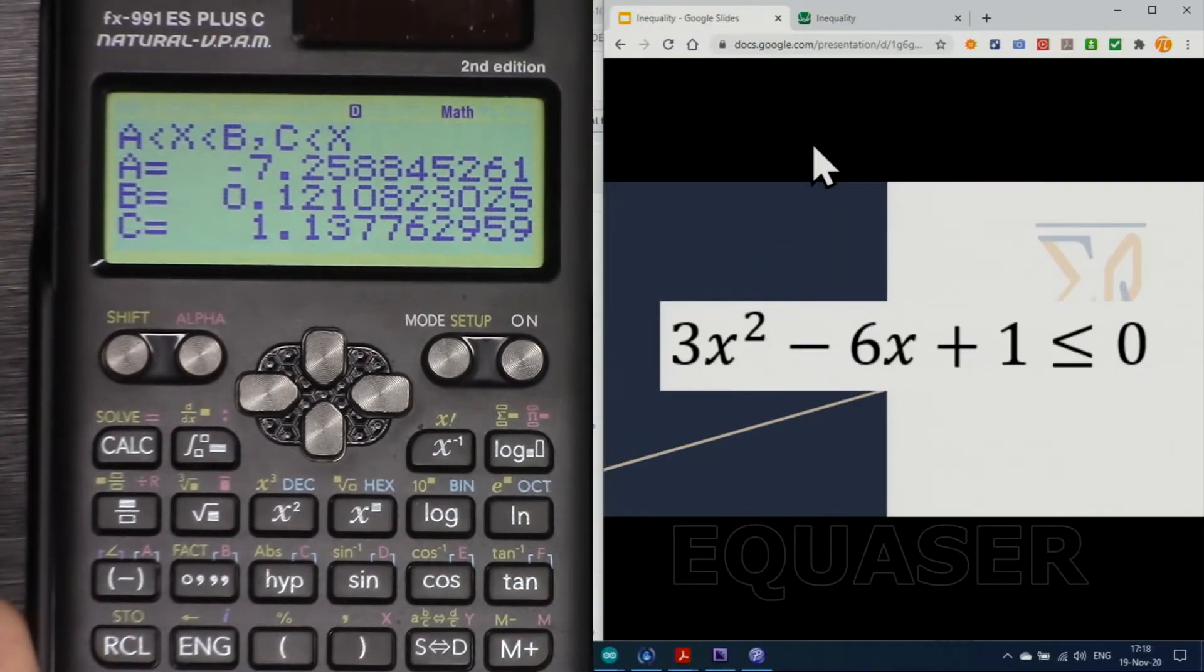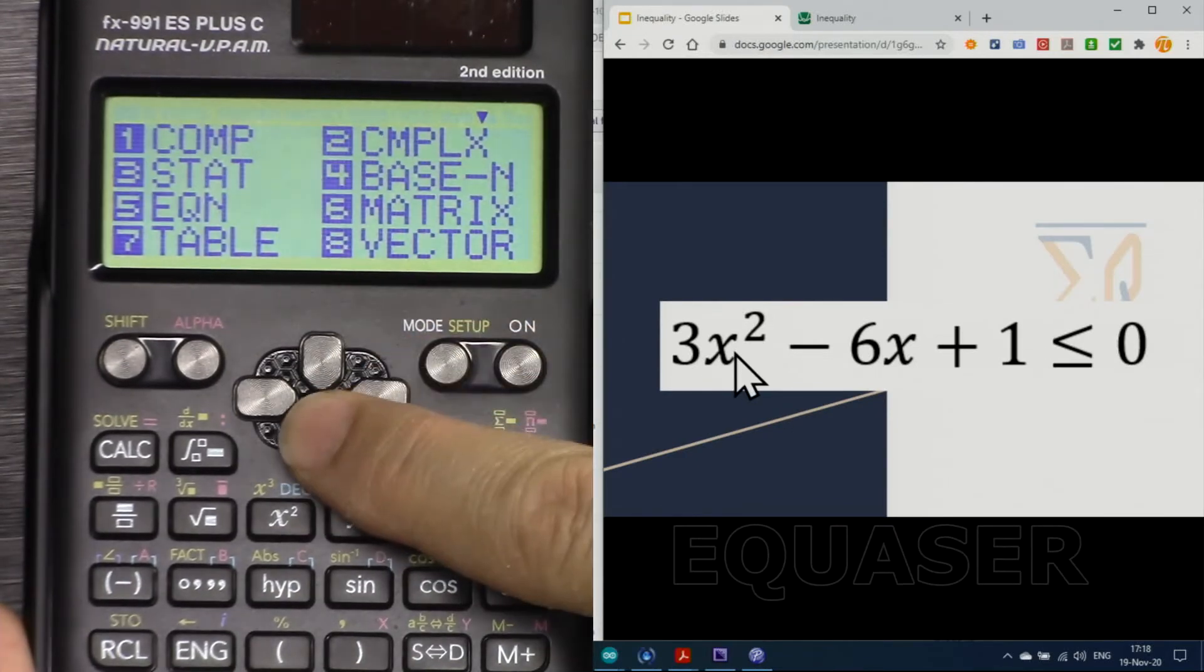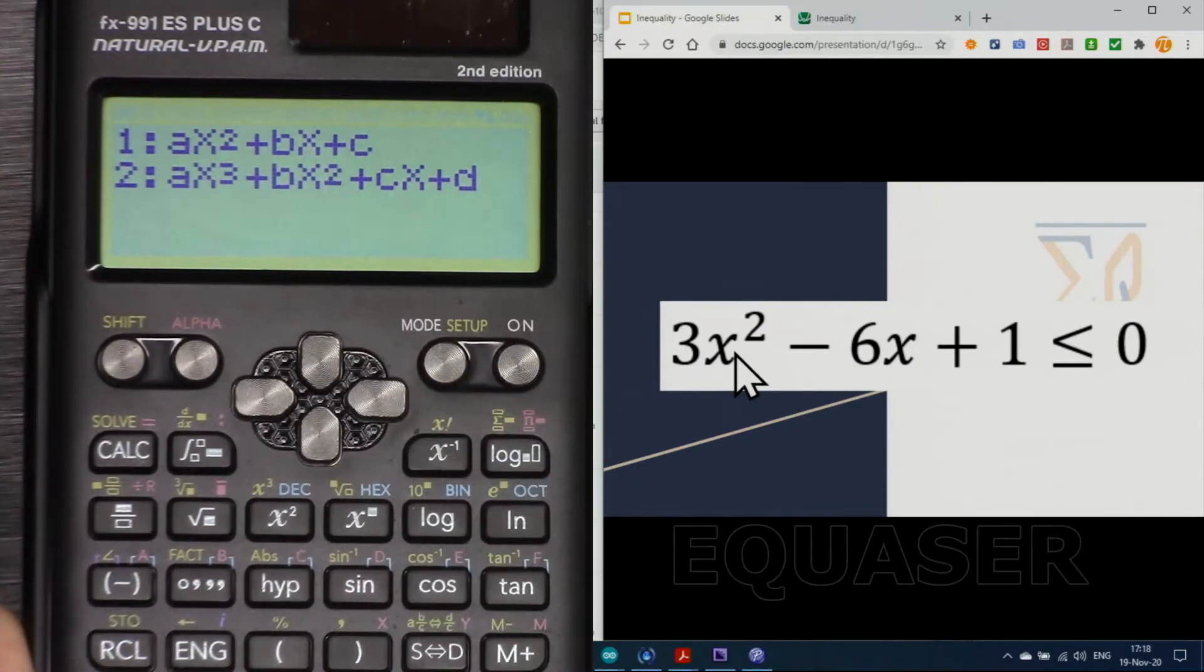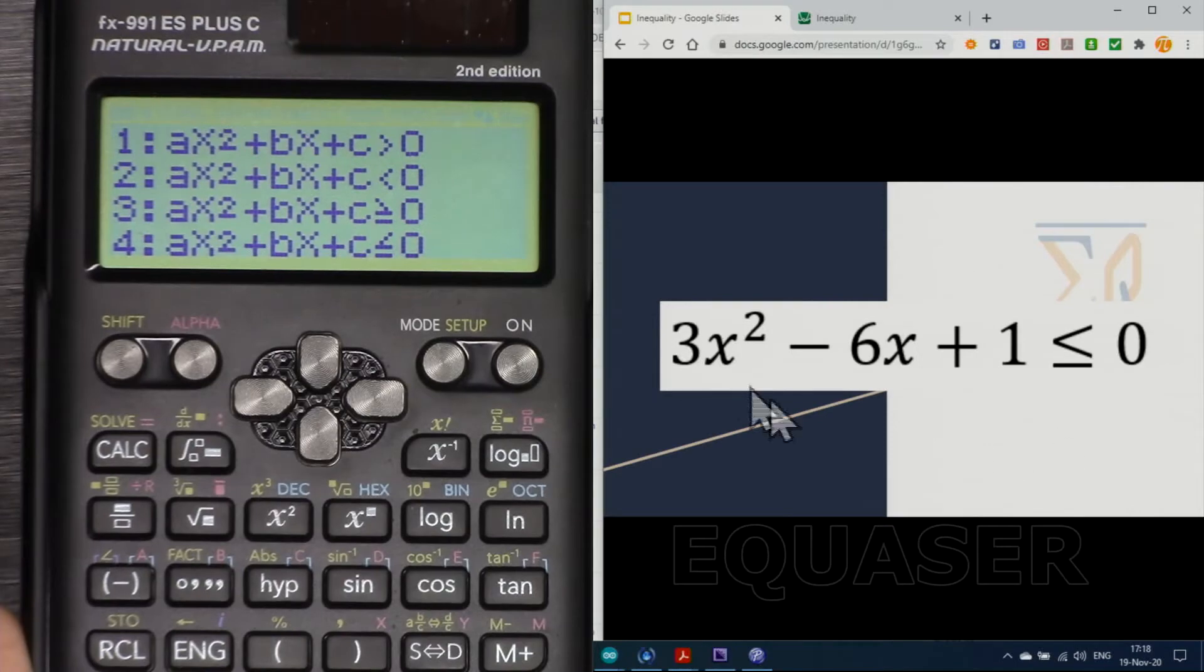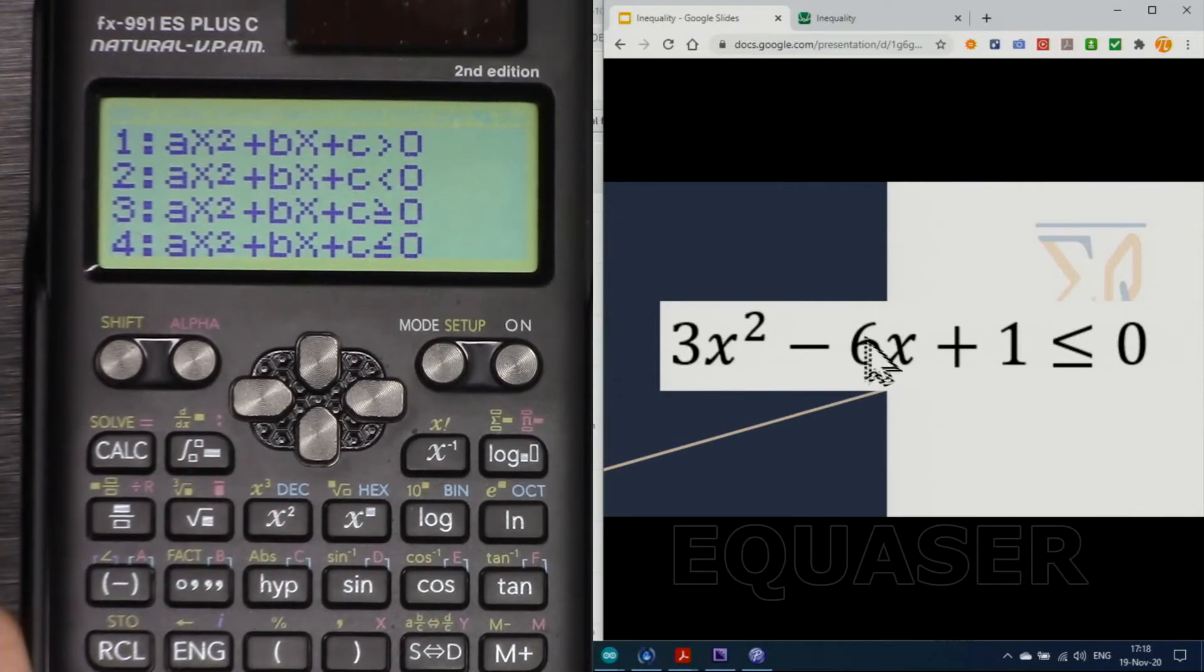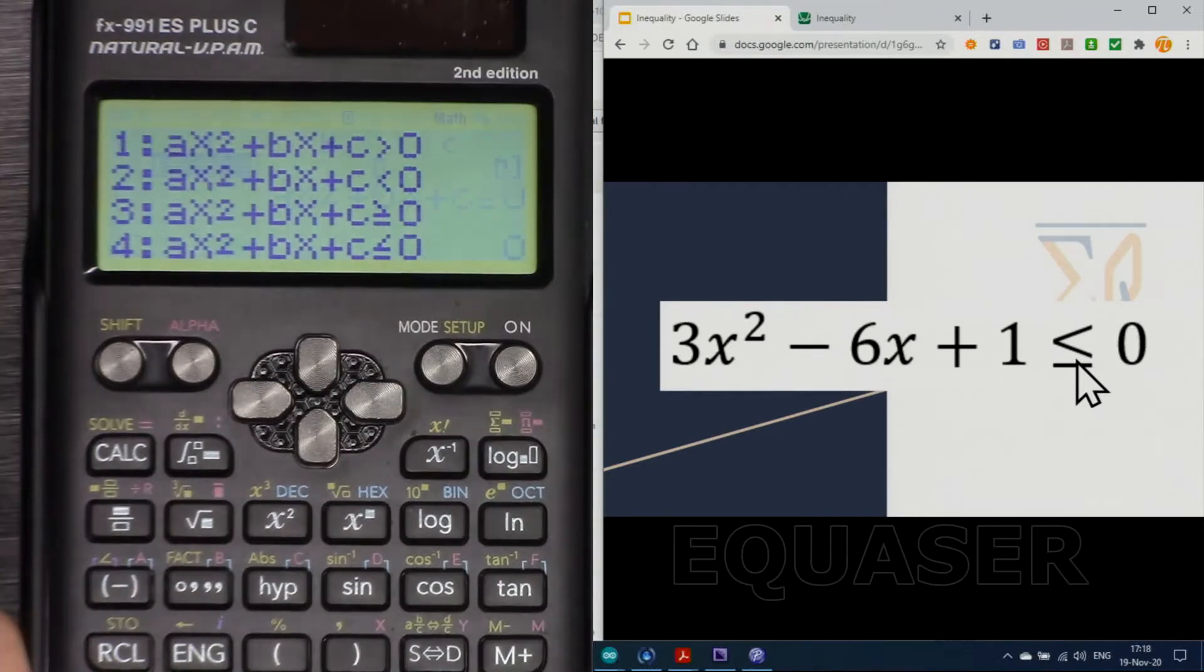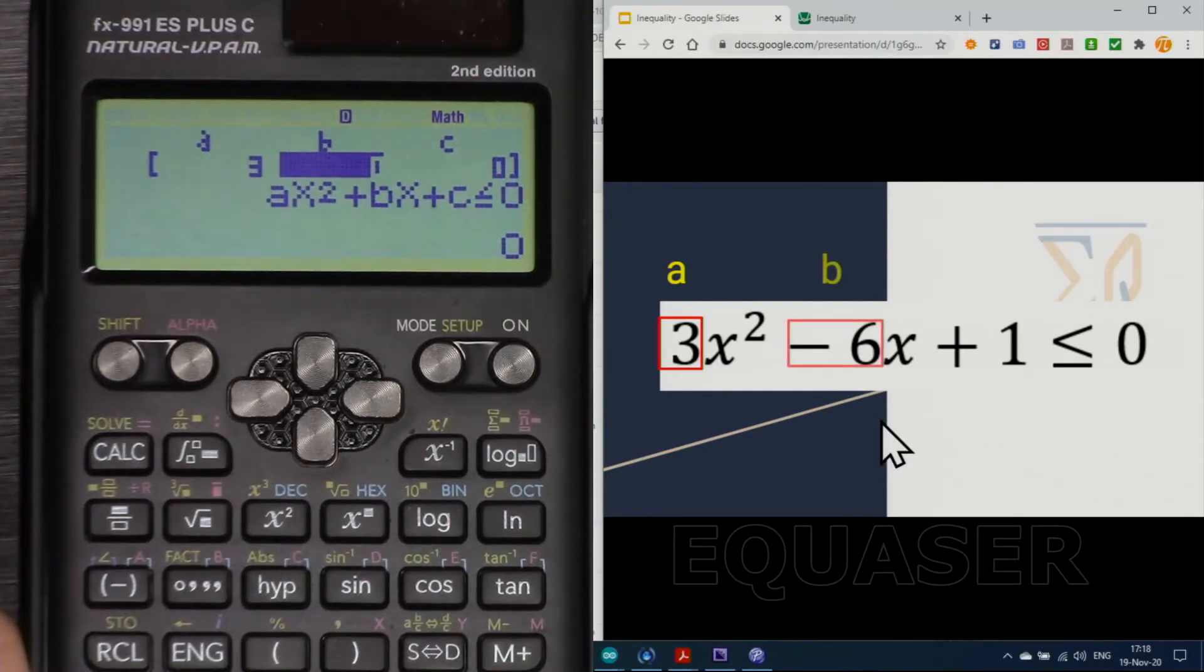Now let's do this one which is equal or smaller, but quadratic. Press this arrow, go down one, and then for quadratic or second degree, press 1. And this time the function is y, or the function is smaller or equal than zero. We select number 4.